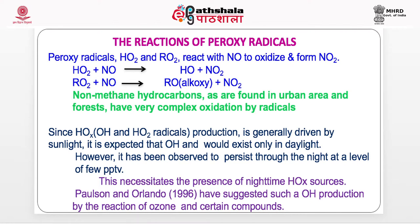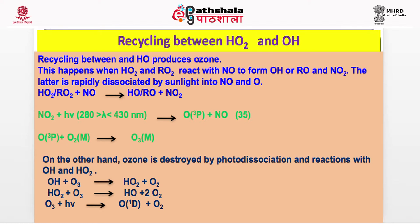Reactions of peroxyl radicals: HO2 (inorganic peroxyl radical) and RO2 (organic peroxyl radical) — their most important reaction is the oxidation of NO into NO2, increasing the ratio NO2/NO. Since OH and HO2 production is generally driven by sunlight, it is expected that OH would exist only in daylight. This is true, but only partly — maximum concentration of hydroxyl radicals is found during daytime, but during nighttime also, where there is no sun, a small concentration of OH is always present, and there are other sources for this.